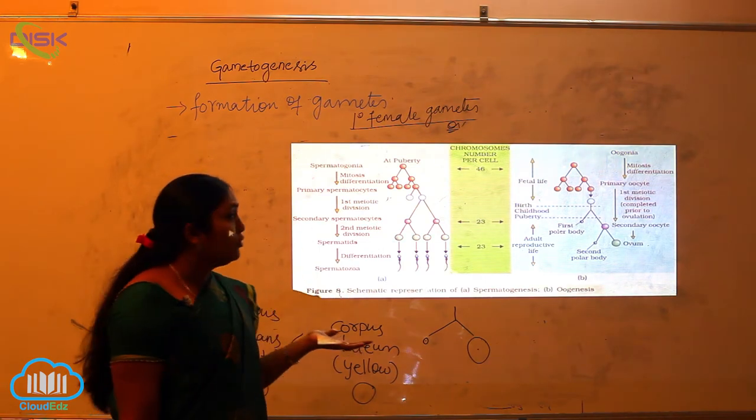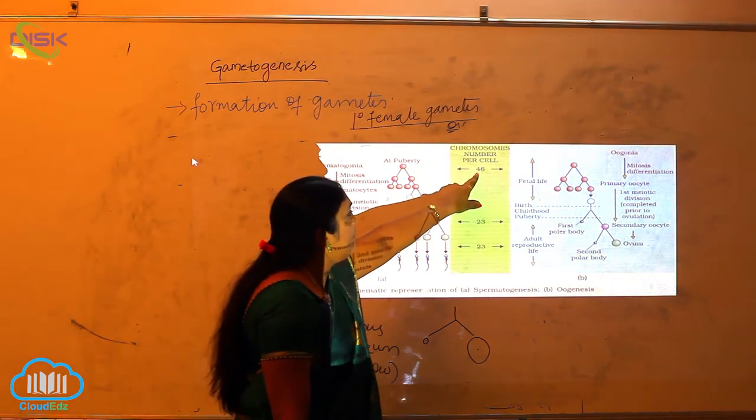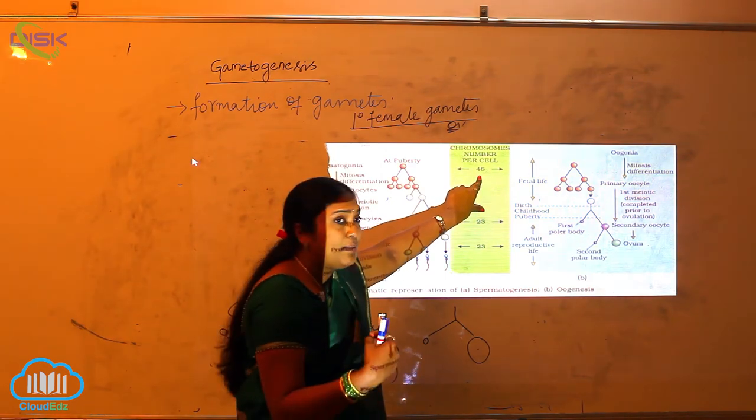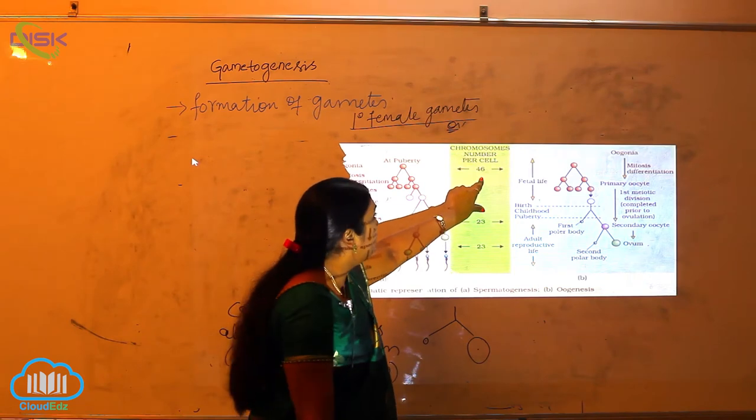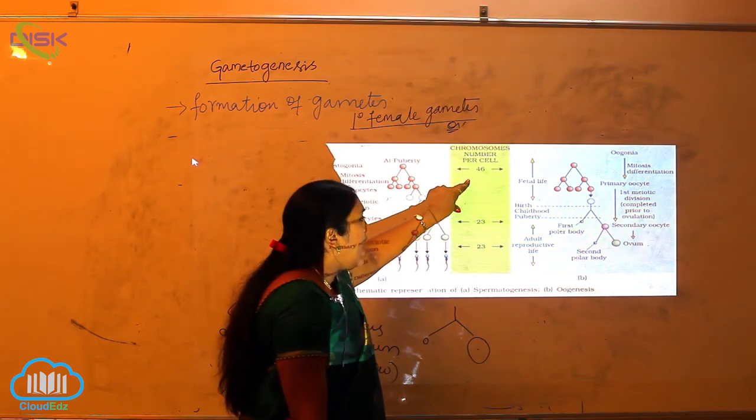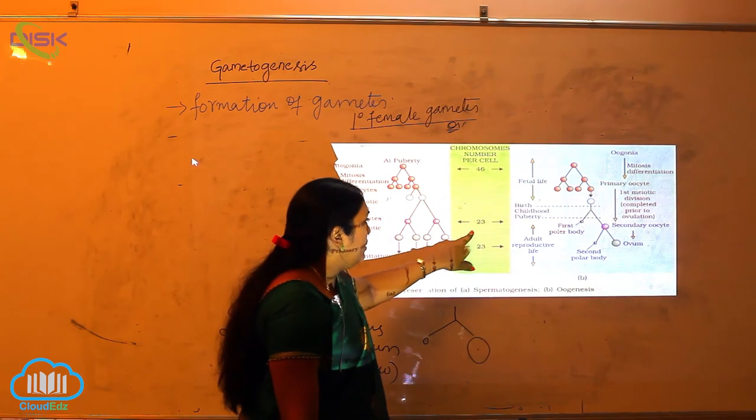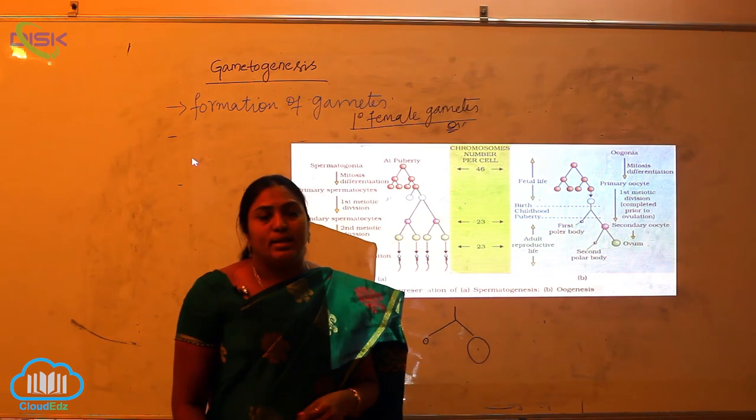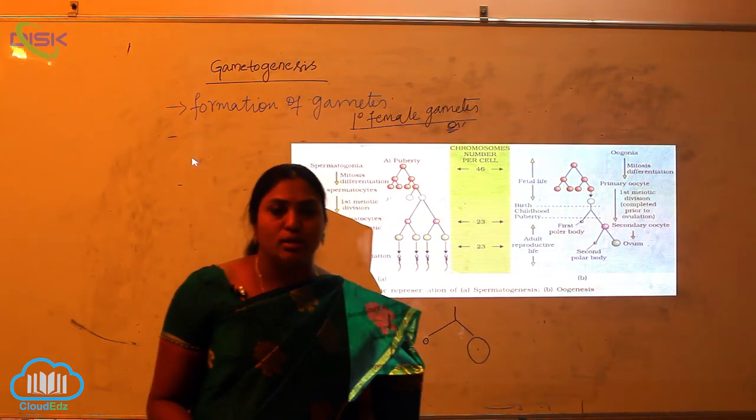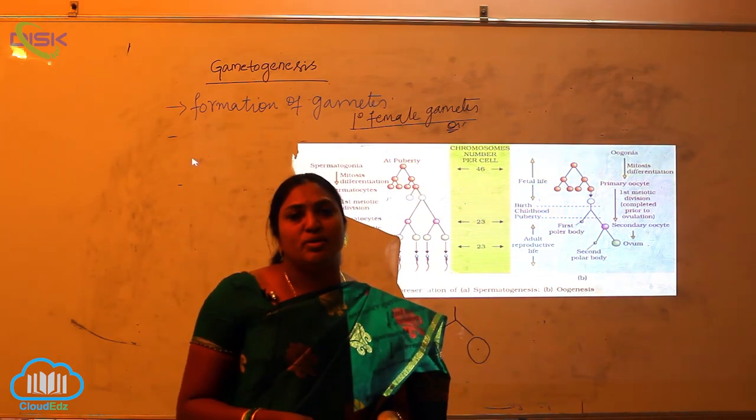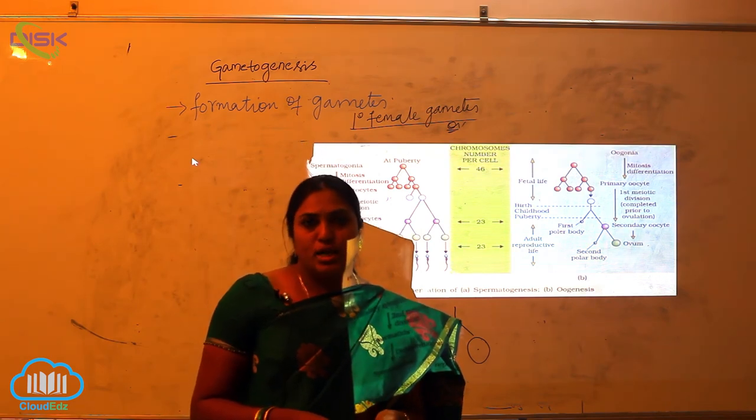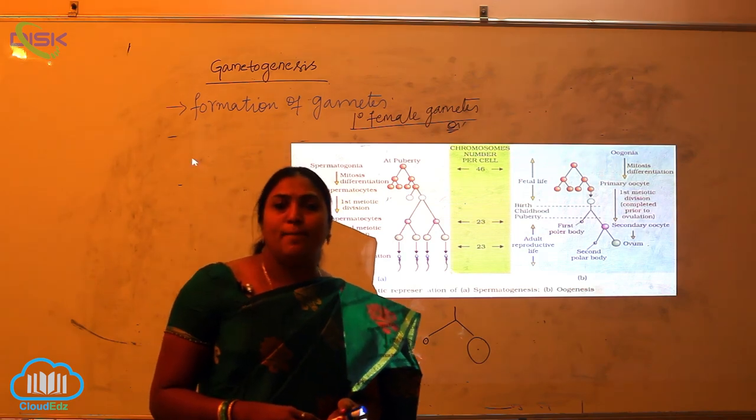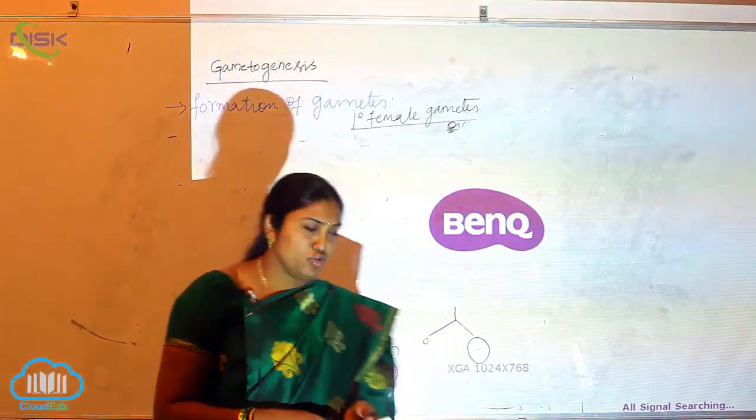Now, what is the number of chromosomes? 46 chromosomes are present at the start. At fetal life, the number of chromosomes is 46. At puberty, it will be 23. In adult reproductive life, again it will be 23. After fertilization, when the sperm unites with the egg, the number of chromosomes of the zygote or embryo will be 2N or 46 chromosomes.